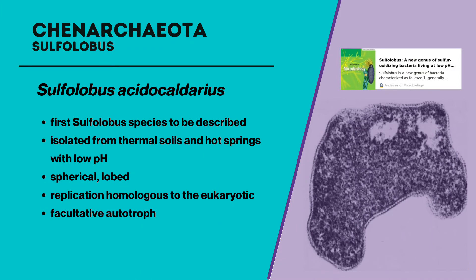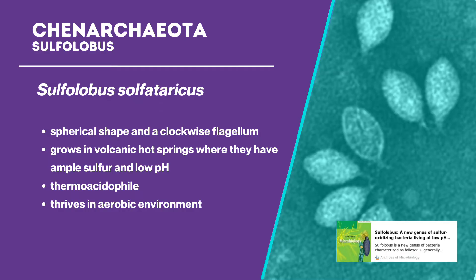Sulfolobus acidocaldarius is the first Sulfolobus species to be described. They were isolated from thermal soils and hot springs with low pH — less than 3 — and temperatures ranging from 65 to 90 degrees Celsius. They are spherical though irregular and usually possess a slob. They have a mechanism of replication homologous to eukaryotes, and are facultative autotrophs that oxidize sulfur to sulfate while fixing carbon from CO2. Sulfolobus solfataricus have a spherical shape and a clockwise flagellum, grow in volcanic hot springs with ample sulfur and low pH, and are thermoacidophiles living in a range of 55 to 90 degrees Celsius at pH 0.9 to 5.8. They maintain cytoplasmic pH at 6.5 and can grow aerobically as free-living chemolithotrophs.